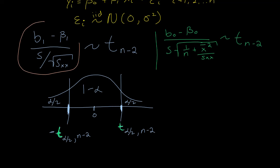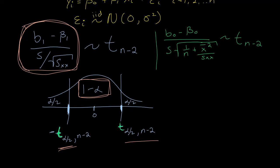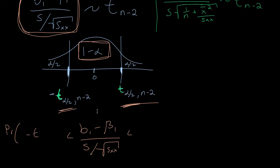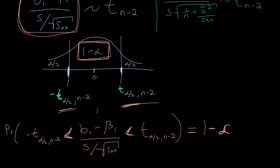Now I can write a probability statement: the probability that b1 minus beta-1, divided by s over the square root of S_xx, is between negative t_{alpha/2, n-2} and positive t_{alpha/2, n-2} equals 1 minus alpha. So for a 95% confidence interval, that probability is 0.95.